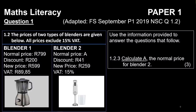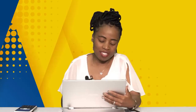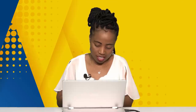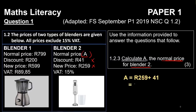The next question might ask you to calculate the value of A — the normal price for blender two. Go to blender two and look for normal price. It's not given, so how do we find it? The normal price is the price before the discount, so these two values will play a role. You're going to add your two values: 259 plus 41 rands. You get 300 rands.